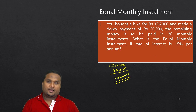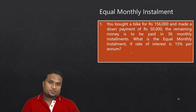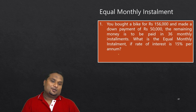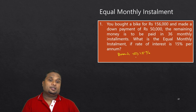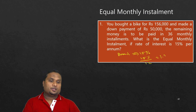We have a formula for finding EMI. The annual interest rate is 15%, so the monthly interest rate will be 15% divided by 12, which is 1.25% per month. This monthly rate is denoted as 'i'.